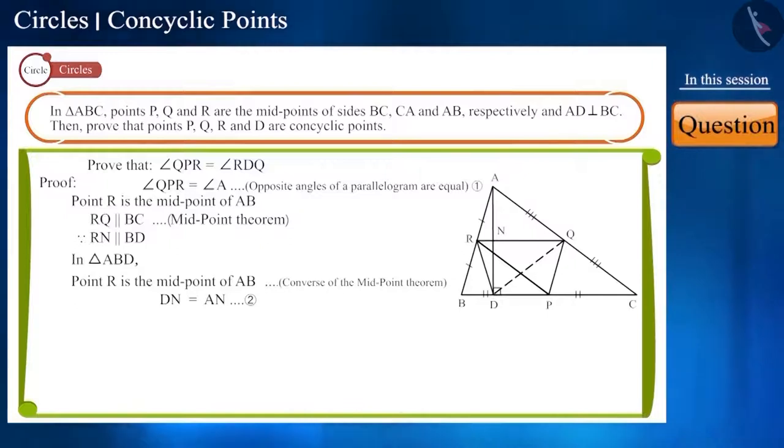Friends, look at triangles ARN and DRN. AD is perpendicular to side BC. This is given to us. And as you can see in the figure, A, N and D are in the same line. So, AN will also be perpendicular to the line segment RQ. And angle ANR and angle DNR will be equal to 90 degrees.